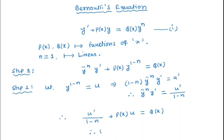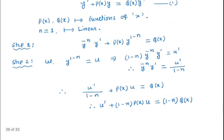So it simplifies to u prime plus (1−n) times p(x) times u equal to (1−n) times q(x). Note that we now have a linear first order differential equation.